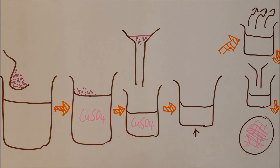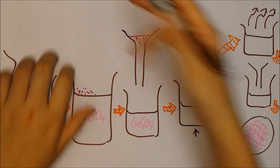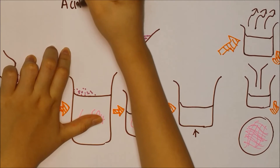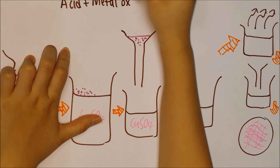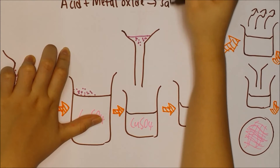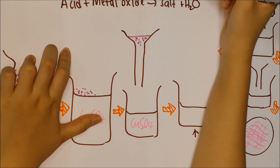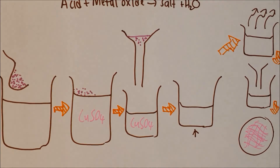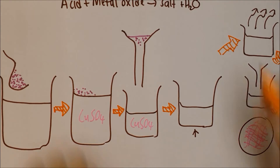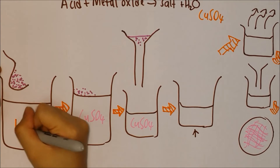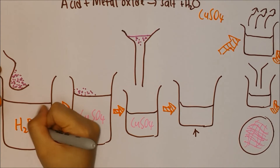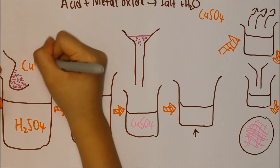Now let's prepare a soluble salt using the second method — acid reacting with metal oxide to form salt and water. For example, to prepare copper sulfate, you need sulfuric acid and copper oxide powder.